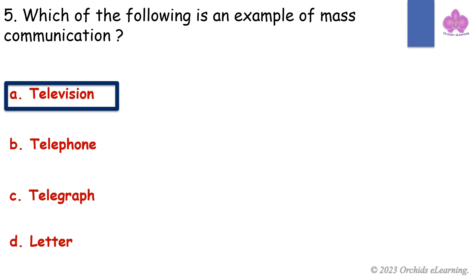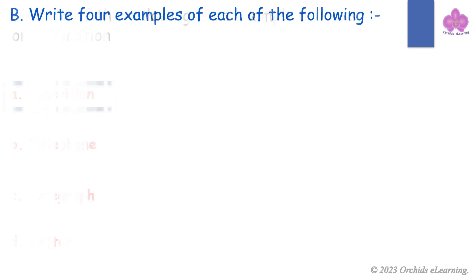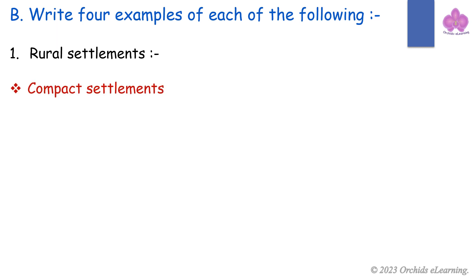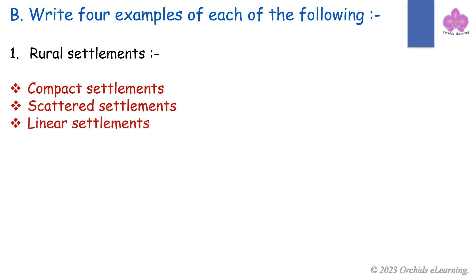Which of the following is an example of mass communication? Answer: Television. Write four examples of each of the following: rural settlements, compact settlements, scattered settlements, linear settlements, and radial settlements.